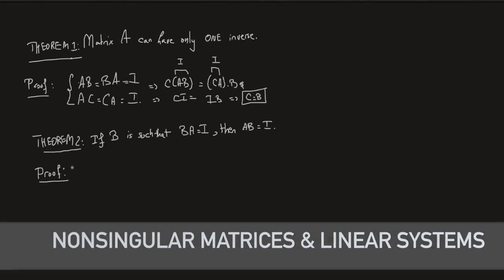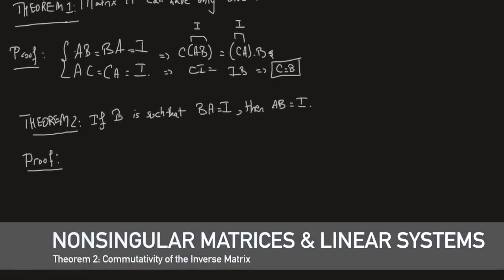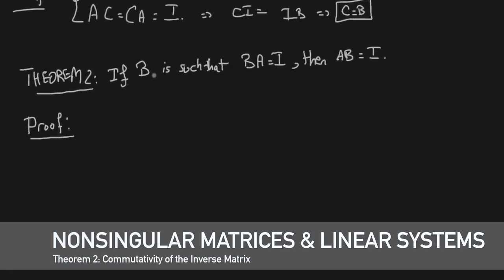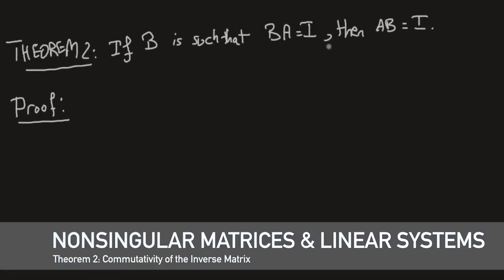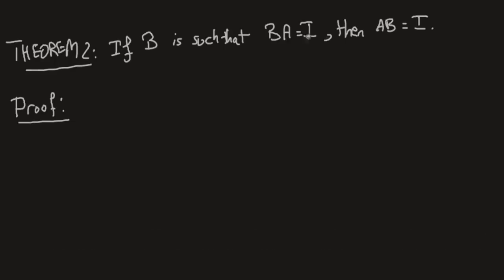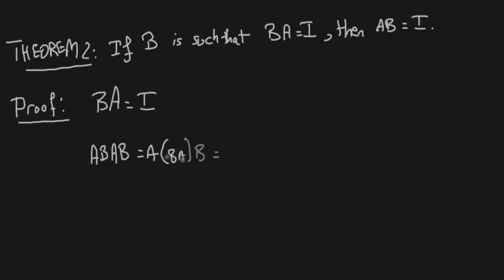Another theorem worth proving: if we have a matrix B such that BA equals I, then AB also has to equal I, meaning B and A commute. To prove this, assume BA equals I. Let's take a look at AB times AB. Let's perform BA first — that is I — so we get AB.